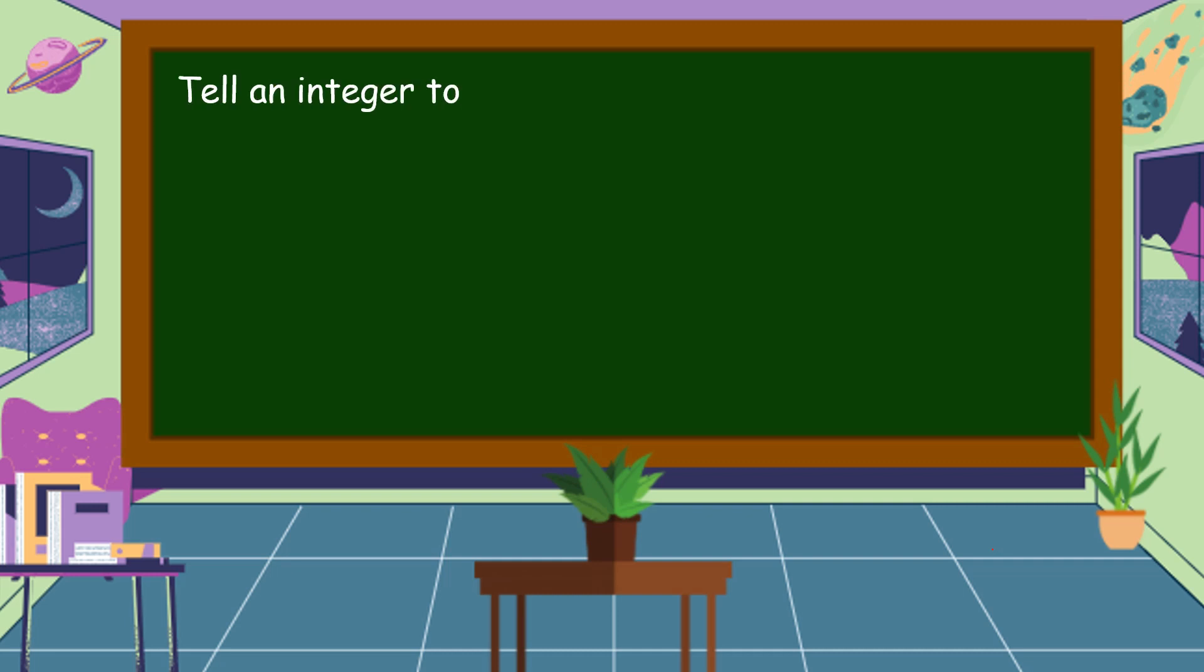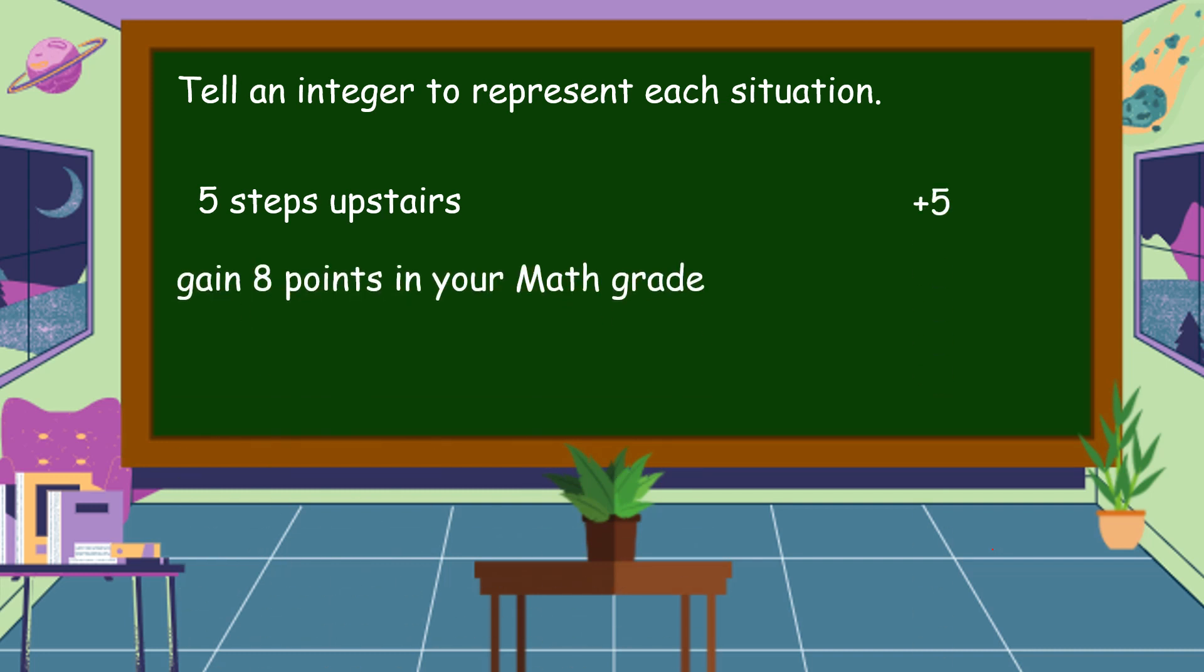Next exercise is, tell an integer to represent each situation. Five steps upstairs. It is positive 5. Gain 8 points in your math grade. It is positive 8. Nine steps backward. The answer is negative 9.